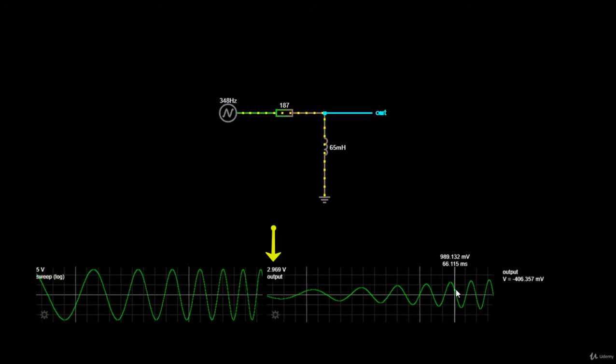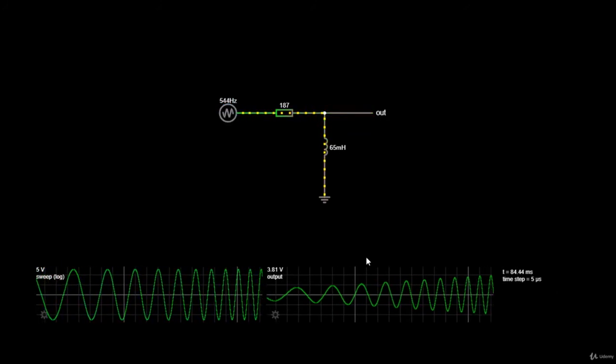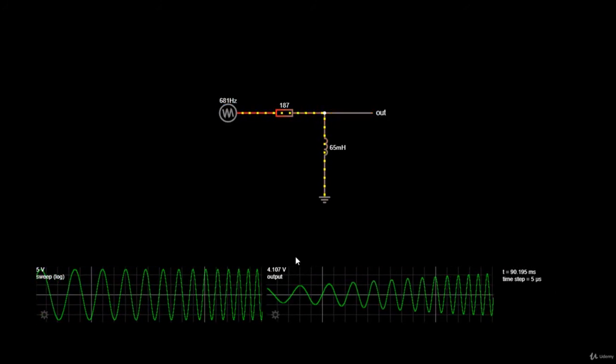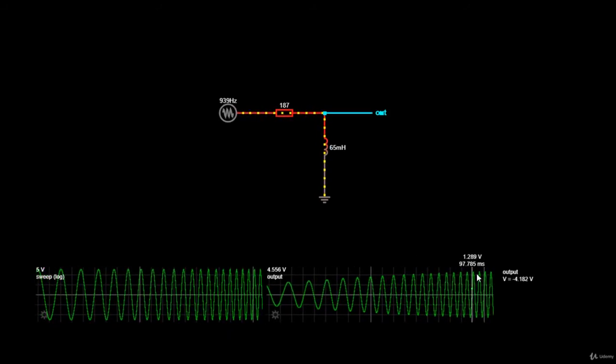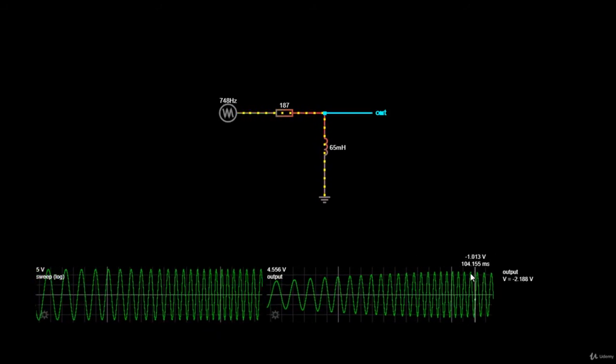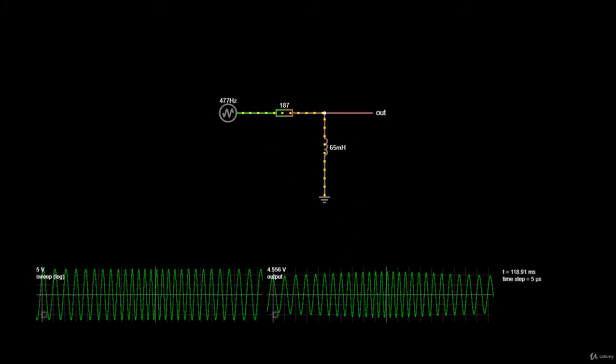As the frequency increases, the output signal's voltage is increasing as well. Now that we cross the frequency of 454 Hz, notice how the output signal starts increasing in voltage until it reaches nearly 5V.